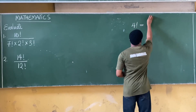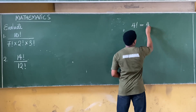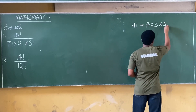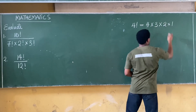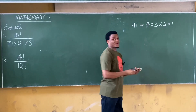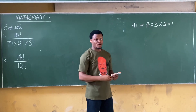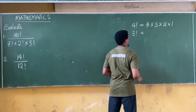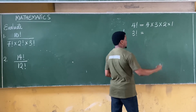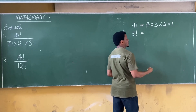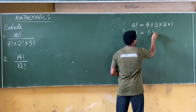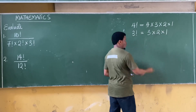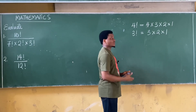So it becomes four times three times two times one. We stop at one — that's why we said 'until one.' Also, if I have three factorial, that also becomes the multiplication of consecutive terms in descending order, which becomes three times two times one, until one.